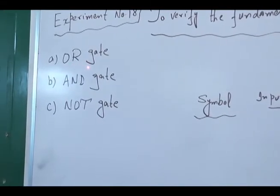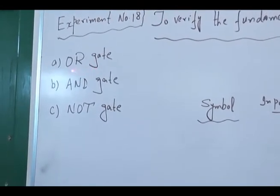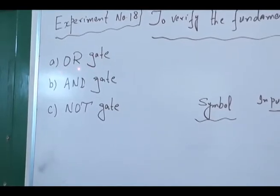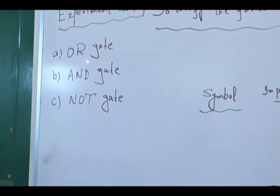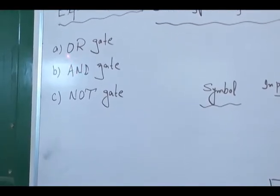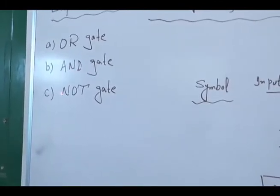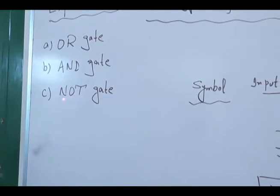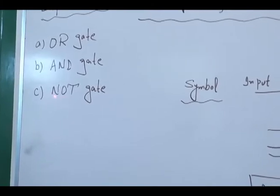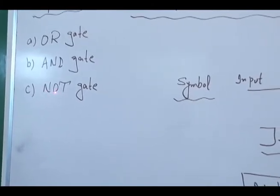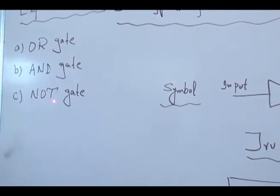The gates use algebra which is called Boolean algebra. The function of the OR gate is equivalent to the sum in algebra. The function of the AND gate is to multiply. And the function of the NOT gate is to invert the given input — if the input is low, it will make it high, and if the input is high, it will make it low.